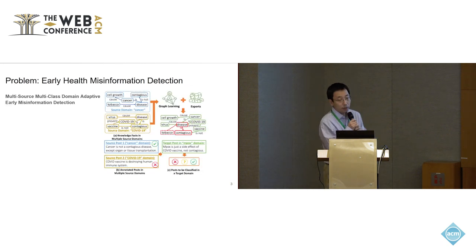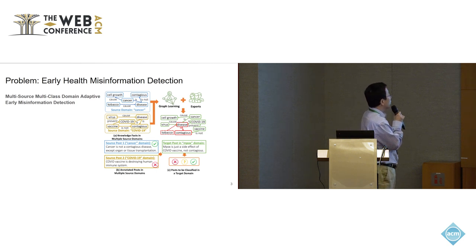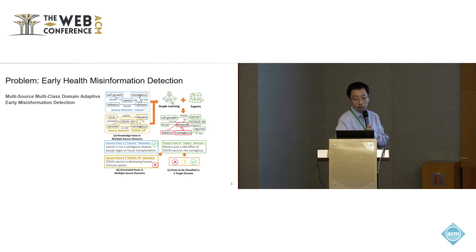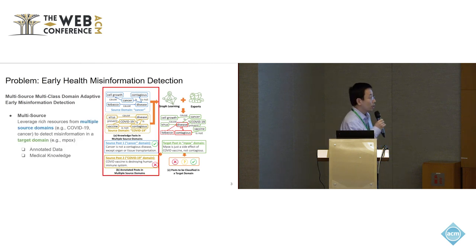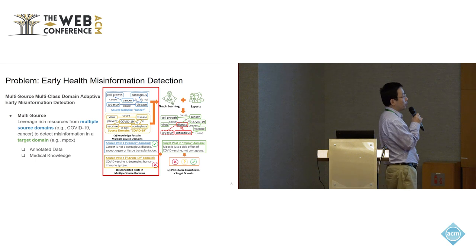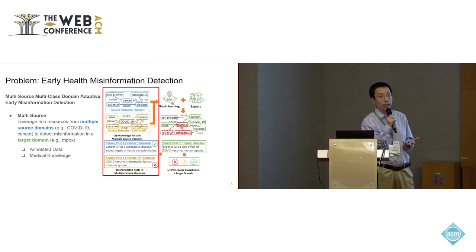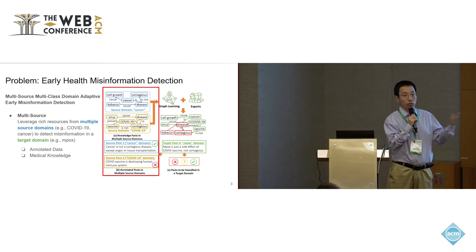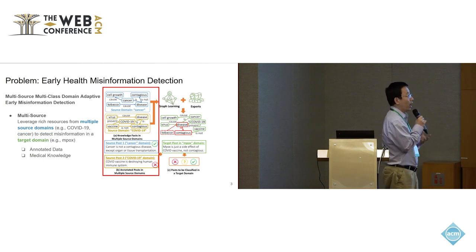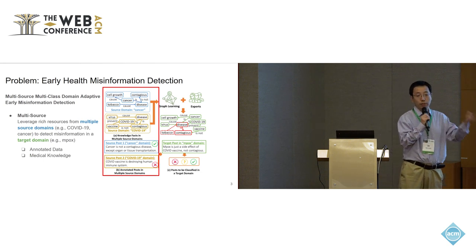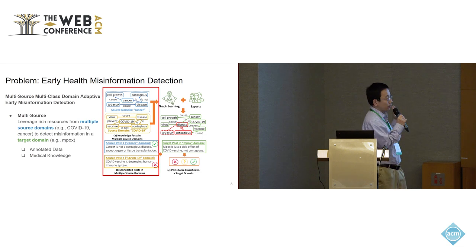Let me formally define the problem we study: early misinformation detection under multi-source and multi-demand situations. The first key aspect is multi-source. A lot of current literature handles misinformation in emergent demands by leveraging knowledge from existing demands — called source demands — using transfer learning or domain adaptation approaches to transfer knowledge from source to target demand.